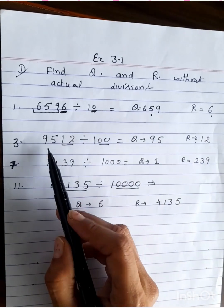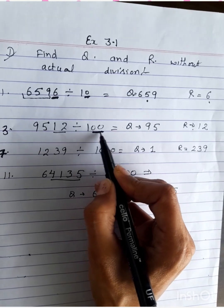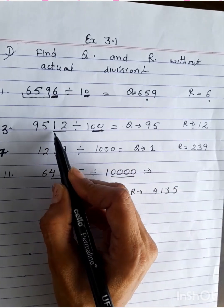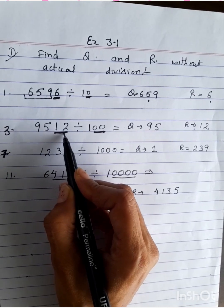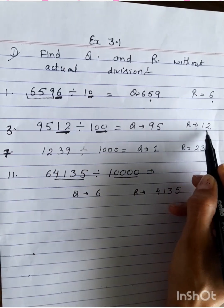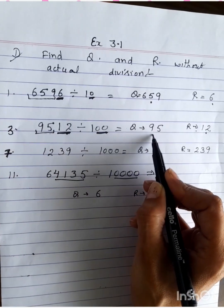Then in the next question, 9512 divide by 100. Two zeros are there with the divisor. So we will mark two digits from backside in the dividend. That are 12. 12 is our remainder. Then 95, which left numbers, 95 that are quotient.